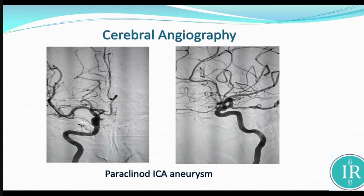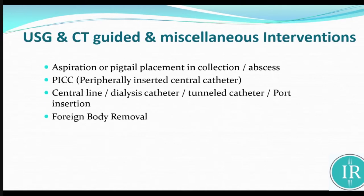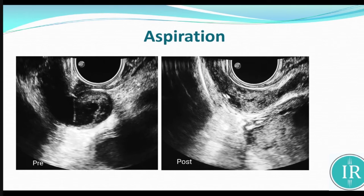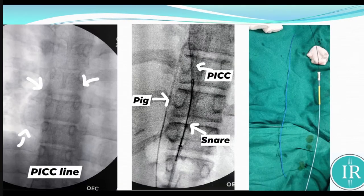Cerebral angiography will be covered by Dr. Jigar. For therapeutic interventions — first, USG and CT-guided interventions: aspiration and pigtail placement in any type of collection or abscess. Peripherally inserted central catheter, known as the PICC line or central line, and foreign body removal. This is a prostatic abscess we can drain through transrectal ultrasound. We can also drain liver abscess, mediastinal leak, and perinephric abscess. A PICC line that is ruptured and going directly into the pulmonary artery can be removed as a foreign body.